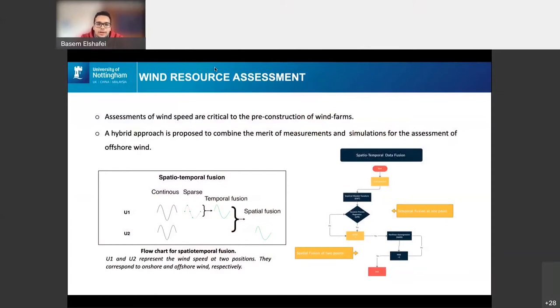Assessments of wind speeds are critical to the pre-construction of wind farms because they give us a clear view of the potential or the amount of energy we can generate from a potential wind farm. So we have an approach that we proposed that combines two different techniques of measurements: LIDAR measurements and WRF simulations.